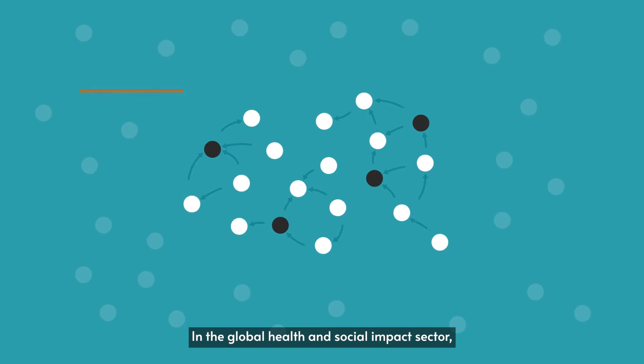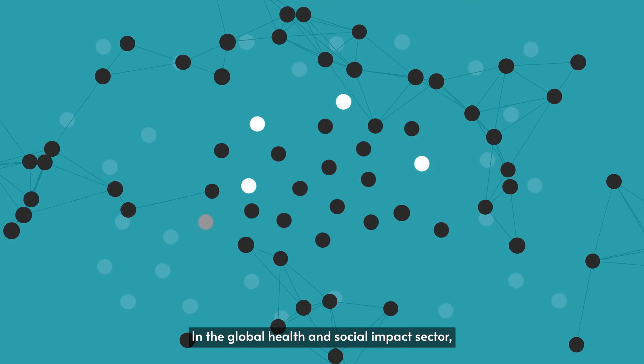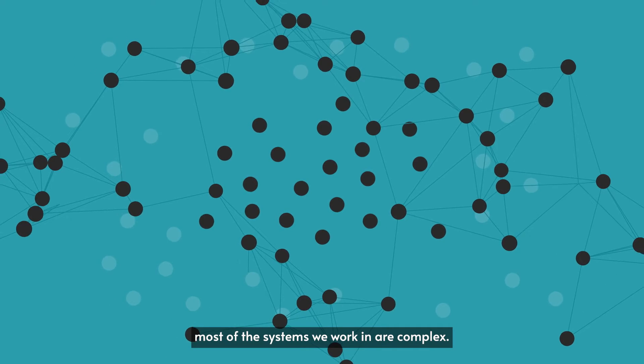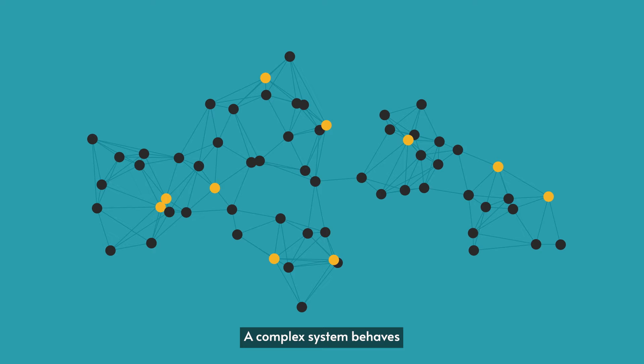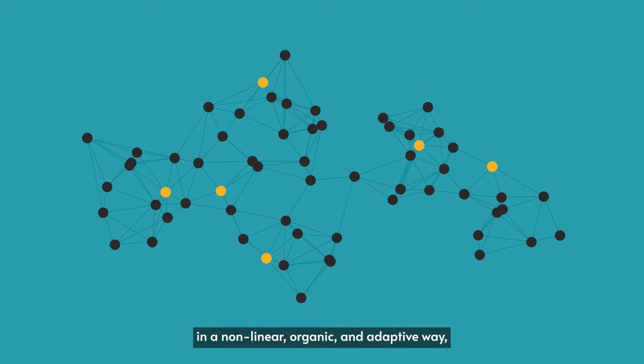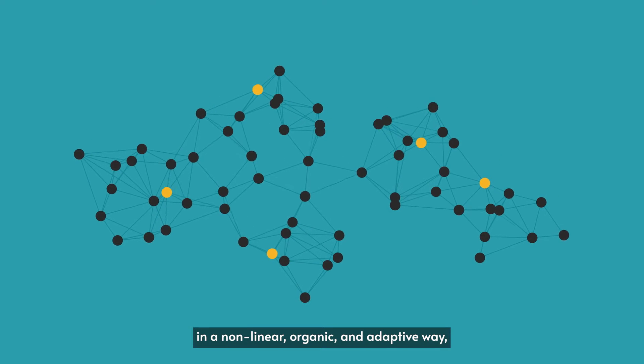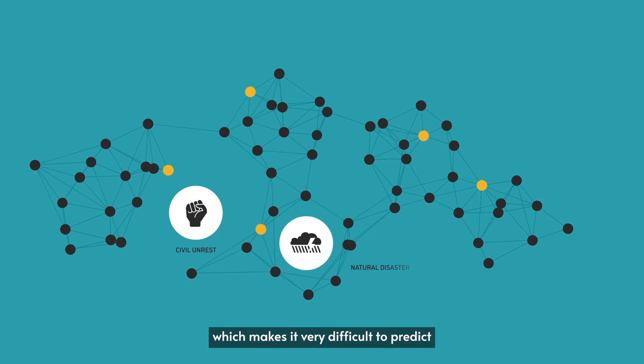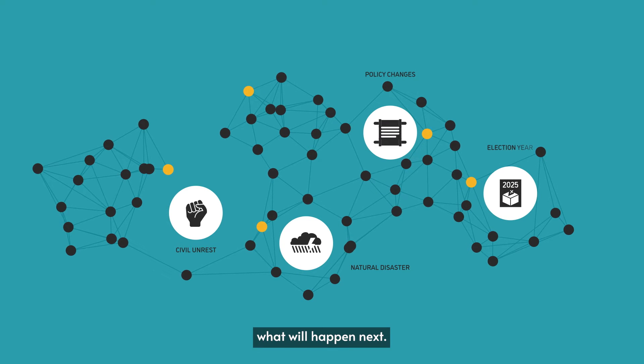In the global health and social impact sector, most of the systems we work in are complex. A complex system behaves in a non-linear, organic, and adaptive way, which makes it very difficult to predict what will happen next.